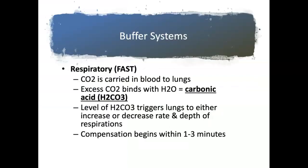There are two very important systems effective in maintaining acid-base balance and hence homeostasis. They are called our buffering systems: the respiratory system and the renal system. The respiratory system is the fast system. CO2 is carried in the blood to the lungs. If the body has an excess of CO2, it binds with water to produce carbonic acid. The way we get rid of carbonic acid and hydrogen ions is by increasing the depth and rate of our respirations. The level of carbonic acid triggers the lungs to either increase or decrease the rate or depth of breathing.